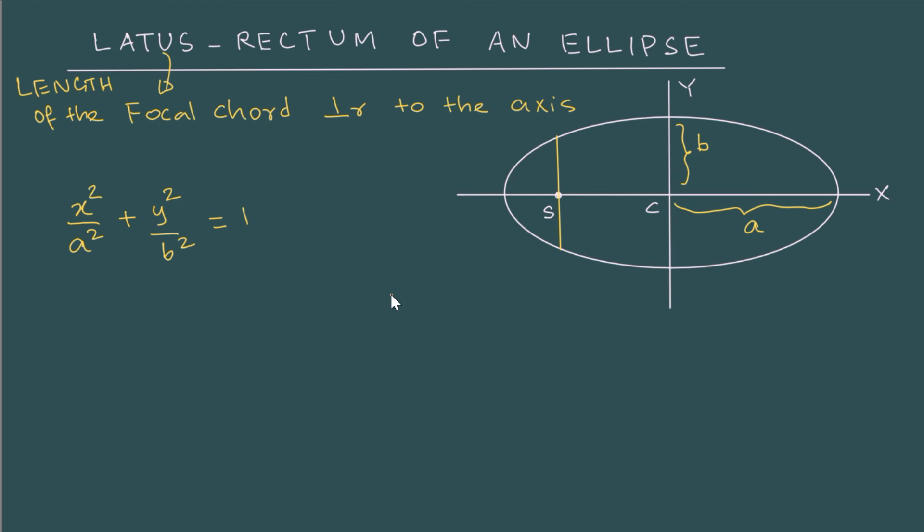So I have drawn a focal chord here. So this is the focal chord, the length. Now we know the coordinates of the focus are minus ae comma zero. And then if I substitute these coordinates, I can get the y value here of this point.